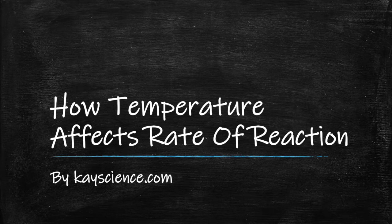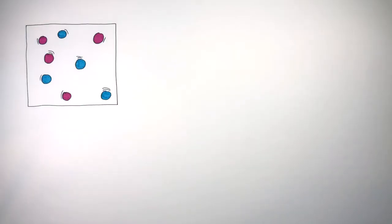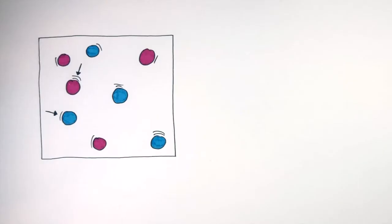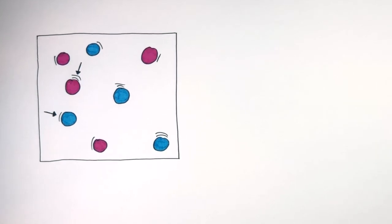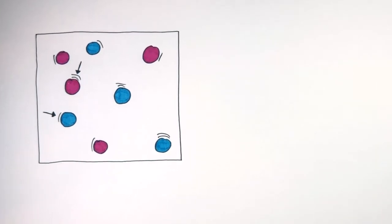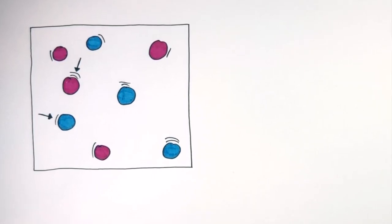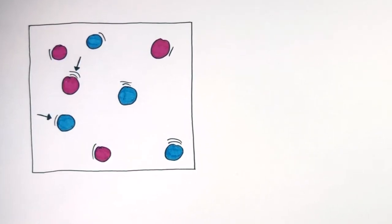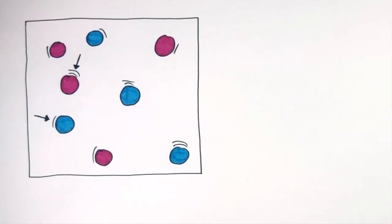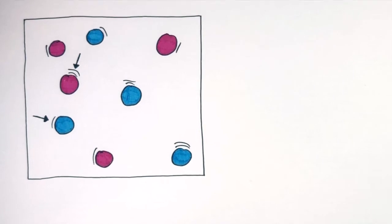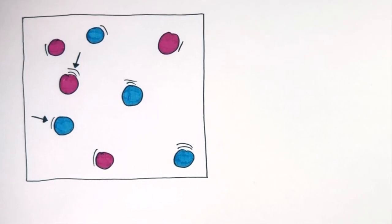How temperature affects rate of reaction. Here we have a container of particles moving around in random directions. For a reaction to take place, the particles must collide. These two particles are moving in different directions, so because they do not collide, a reaction cannot take place, even if they both have the activation energy.